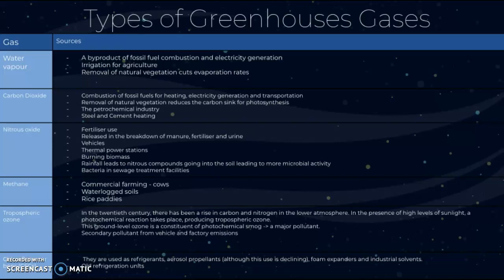Methane can come from commercial farming — from cows and sheep — waterlogged soils, rice paddies, and also from permafrost, which is another source not always listed in the table. Tropospheric ozone has risen in the 20th century due to increases in carbon and nitrogen in the lower atmosphere; in the presence of high sunlight, a photochemical reaction creates this ground-level ozone, which is a constituent of photochemical smog and a major pollutant and greenhouse gas. It can also arise as a secondary pollutant from vehicle and factory emissions.